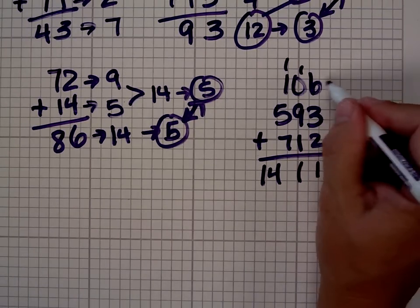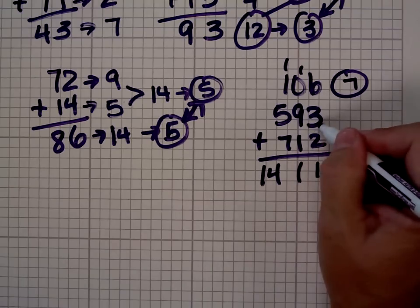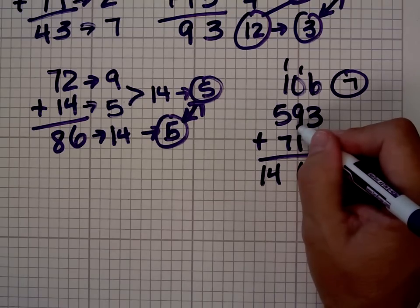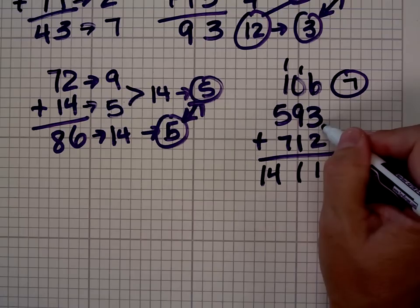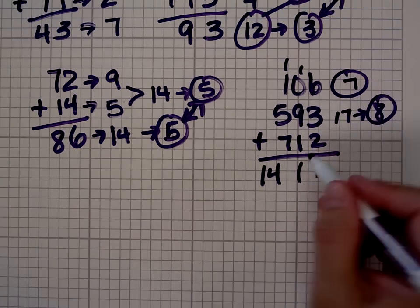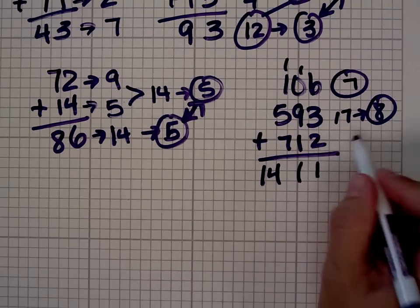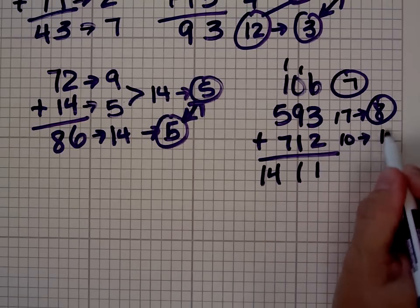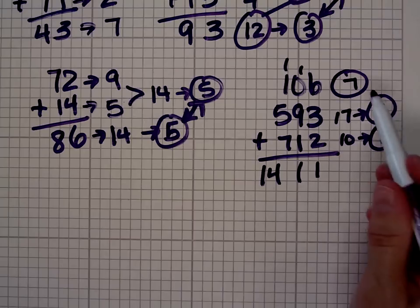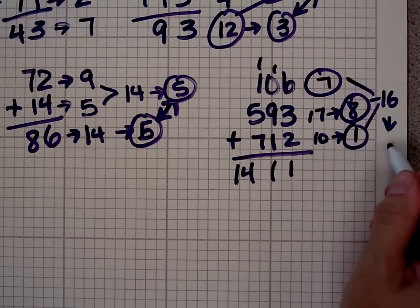Let's make sure we're correct. The digital root of 106 is 7. The digital root of 593, 5 plus 9 is 14, plus 3 is 17. 1 plus 7 is 8. The digital root of 712, 7 plus 1 is 8, plus 2 is 10. The digital root of 10 is 1. So we have 7, 8, and 1. If we add those together, we get 16. I'm sorry, I'm running out of room here. And the digital root of 16 is 7.